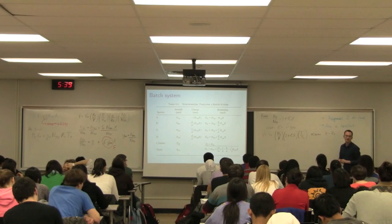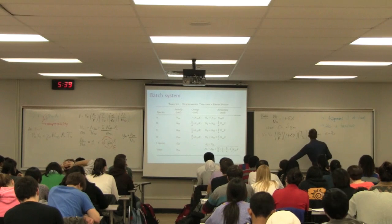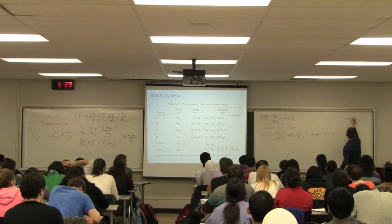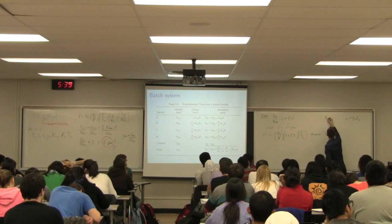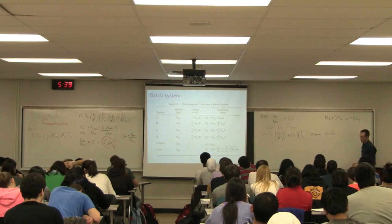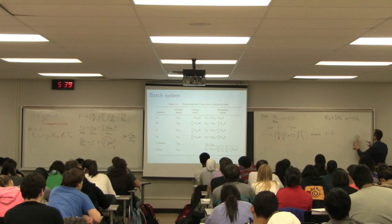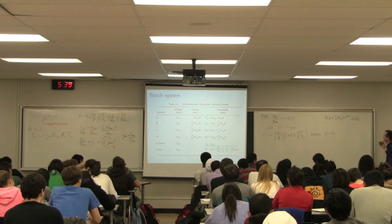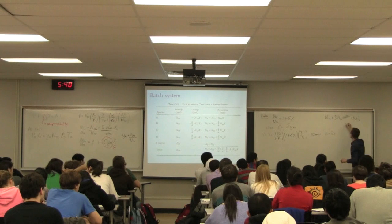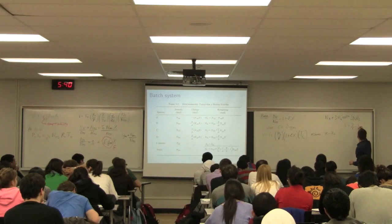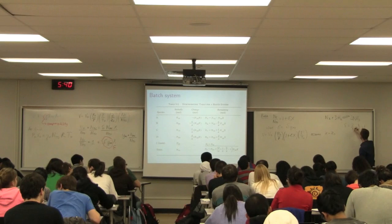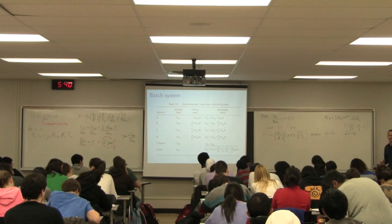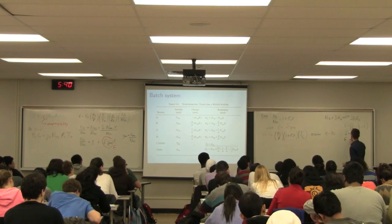Let's take a look at a system where the number of moles decreases over time. Let's take the ammonia synthesis system: one mole of nitrogen plus three moles of hydrogen going to two moles of ammonia. The total number of moles decreases as the reaction progresses. So delta equals (2/1) minus (3/1) minus (1/1) — delta is minus 2 for that situation. That implies that epsilon is negative, since ε = δ × Y_A₀.